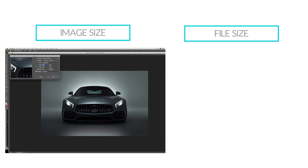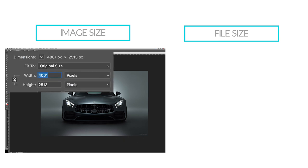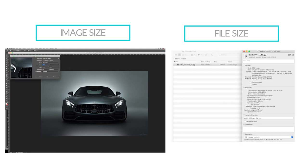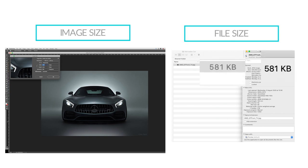The terms image size and file size are easily confused but it's important to understand the difference. Image size refers to the dimensions of the image — the width and the height — and is measured in pixels. File size refers to the amount of space an image takes up as data on your computer, hard drive or memory card, and is measured in kilobytes, megabytes or gigabytes.